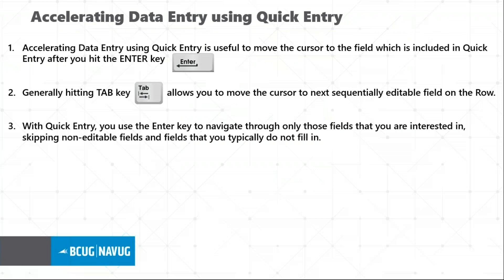This is a cool feature which is accelerating data entry through quick entry. Basically, when you are doing an entry and you hit Enter, the cursor will directly move to the field which has been selected for quick entry, skipping the editable fields in between. If you want to move to the next sequential editable field, you have to hit Tab. Let me show you how it works.